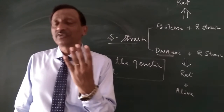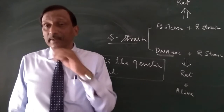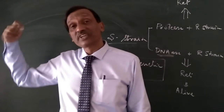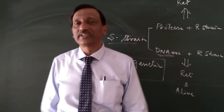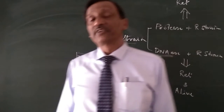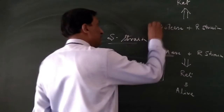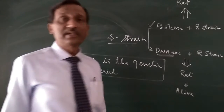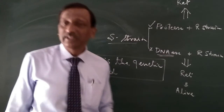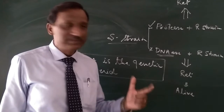DNA was thought to be made up of only 4 types of nucleotides — adenine, thymine, guanine and cytosine — so how much variation can it provide? Whereas proteins are made up of 20 different types of amino acids, ranging from as small as 50 amino acids to very large proteins. People thought protein is the genetic material and were not ready to accept DNA. This experiment gave the way for selection of genetic material, but was not accepted by the large community.